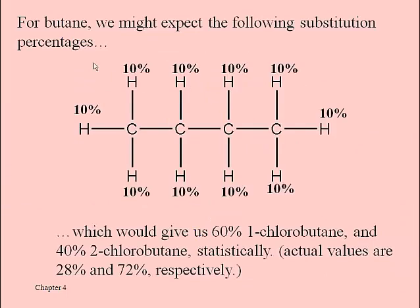If all these hydrogens were equally reactive and could be removed at equal rates, we would expect 10% reaction at each of the 10 locations. That would give 60% of 1-chlorobutane from six hydrogens and 40% of the 2-chloro product from the four remaining hydrogens — those are the statistical probabilities. But we get a very different ratio, with a lot more of the 2-chloro product, and that has to do with the stability of the radicals that are formed along the way.